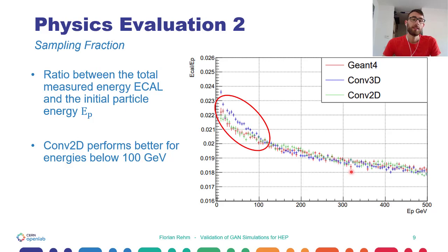The second metric which I want to introduce is the sampling fraction. It plots on the x-axis the input energy of the primary particle into the calorimeter, and on the y-axis the ratio of e-cal divided by the input energy. E-cal is simply the sum of all pixel entries of our image and corresponds to the total measured energy of the calorimeter. In this plot, we can see that for energies below 100 GeV, the convolutional 3D model performs worse, whereas the convolutional 2D model performs good for the full energy range.